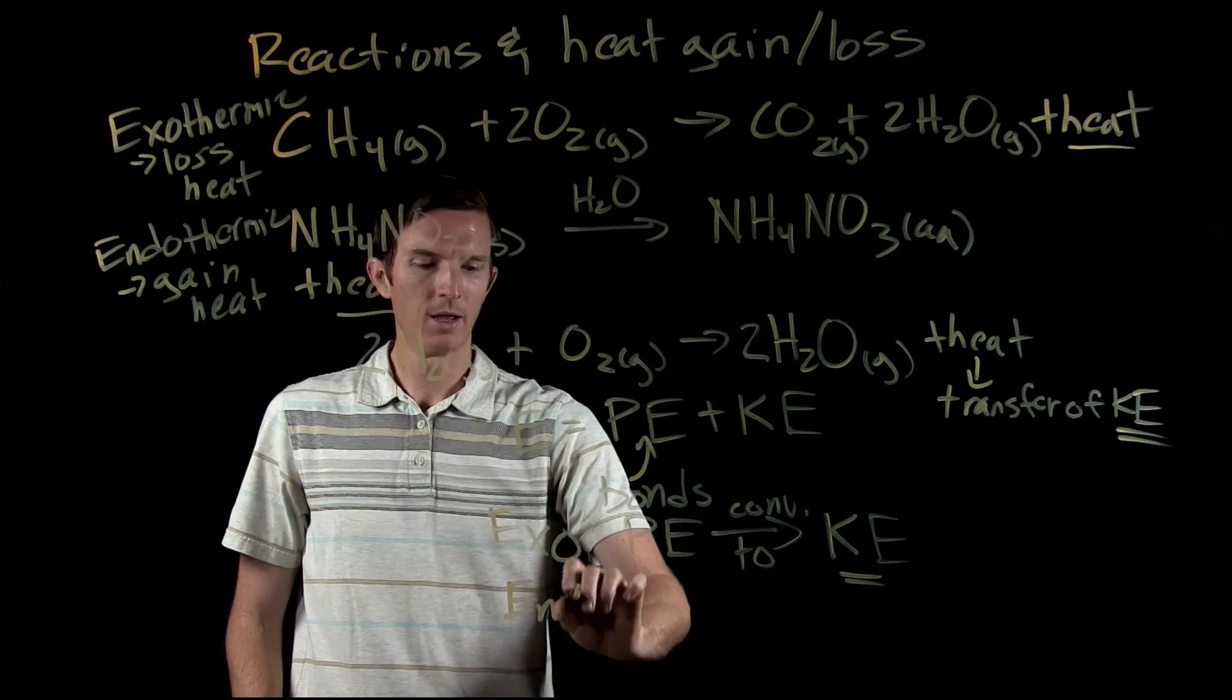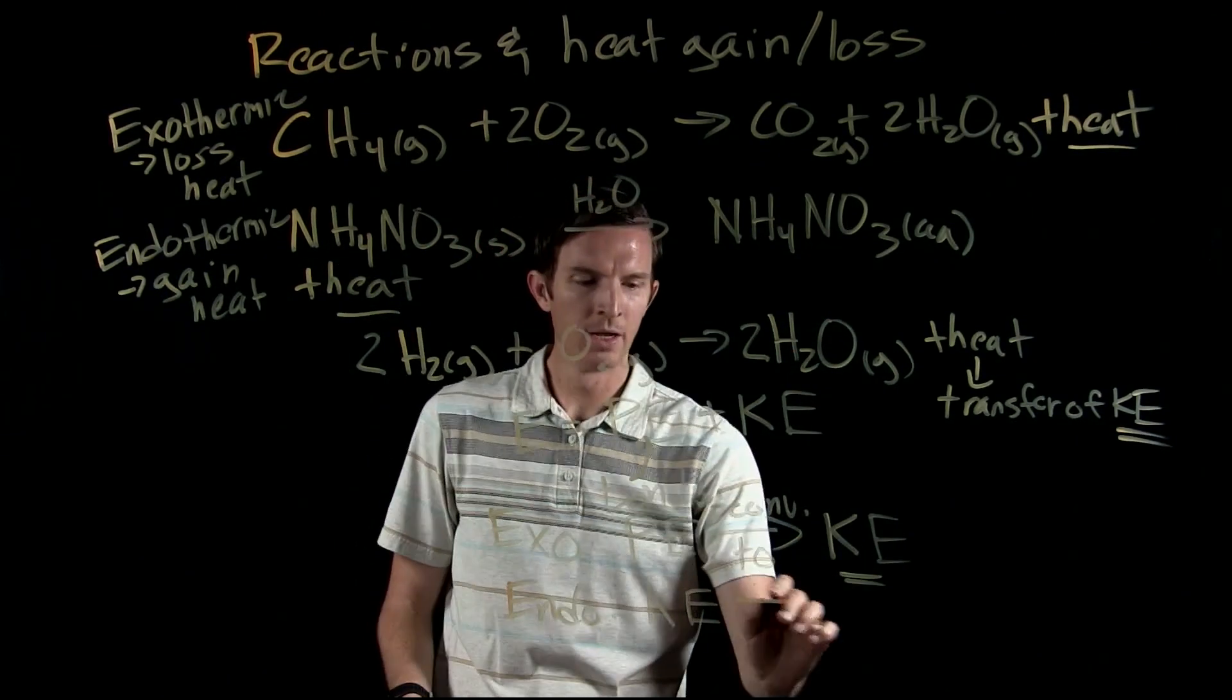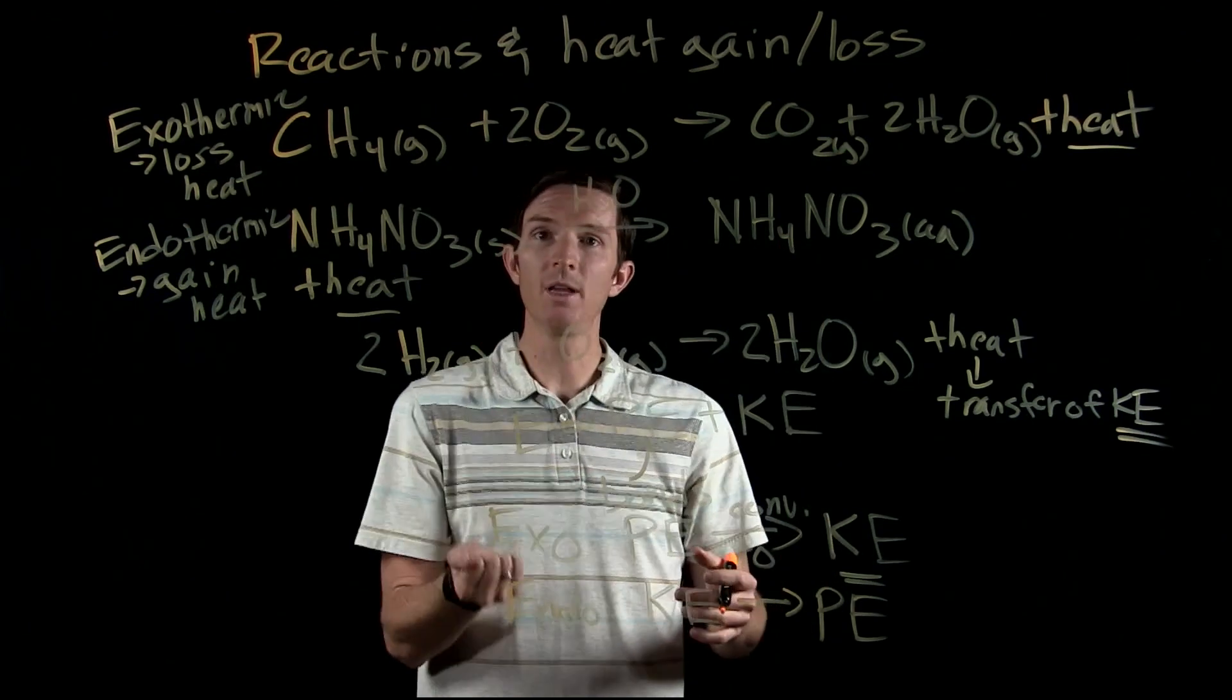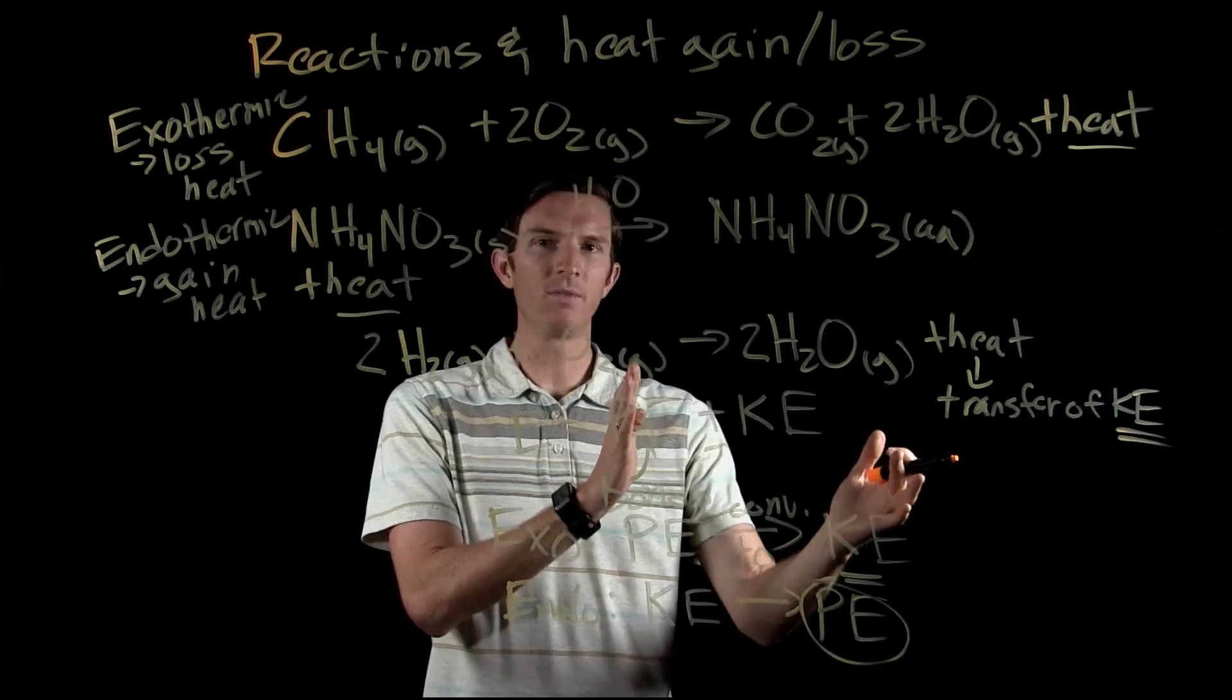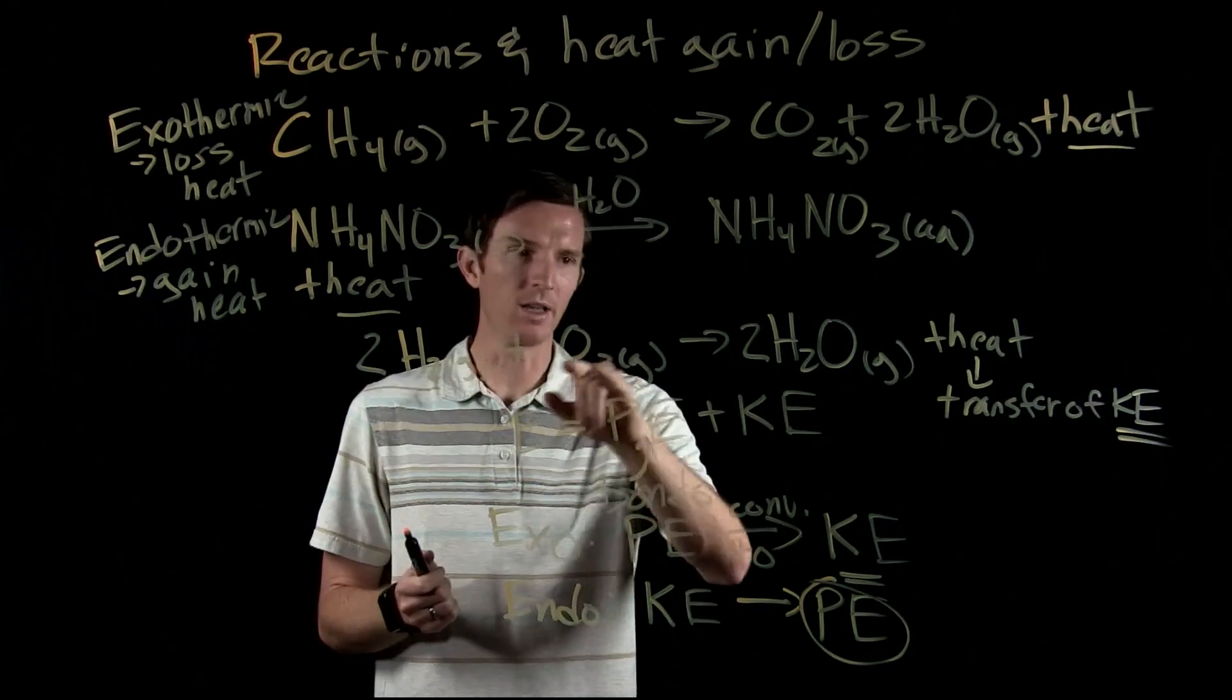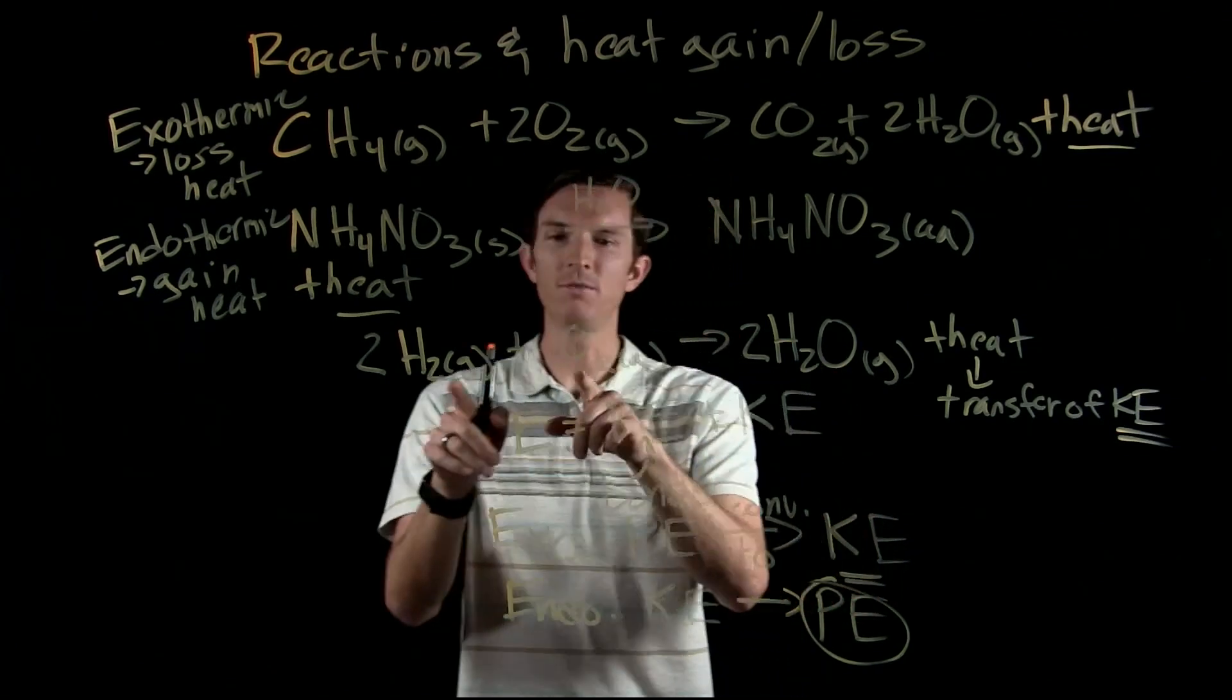The inverse is true for an endothermic reaction. We have kinetic energy because the molecules are always moving, and it's going to convert to potential energy. This means we decrease the amount of kinetic energy, which decreases our average kinetic energy and decreases the temperature. We end up with more potential energy. So it's this idea of converting between stored energy and movement energy that causes us to have an exothermic or endothermic reaction based upon the bonds that are broken and formed. It has to do with the bonds breaking and forming and the relative strengths of these two.